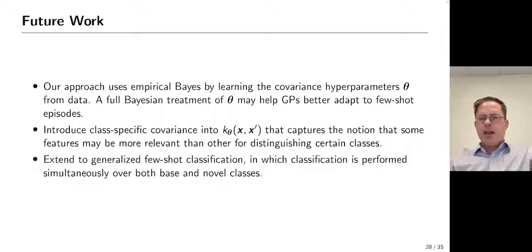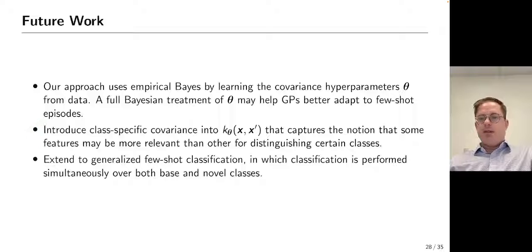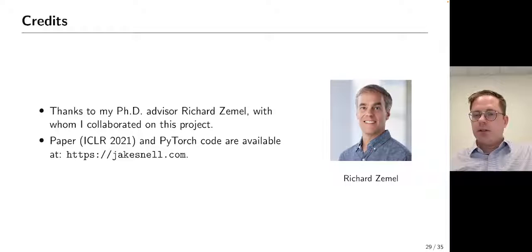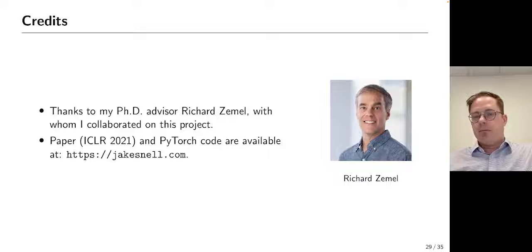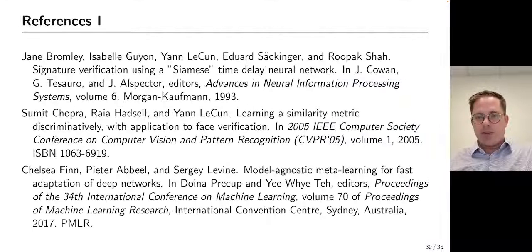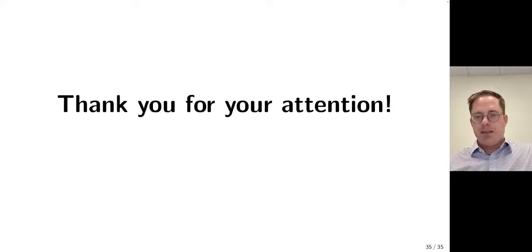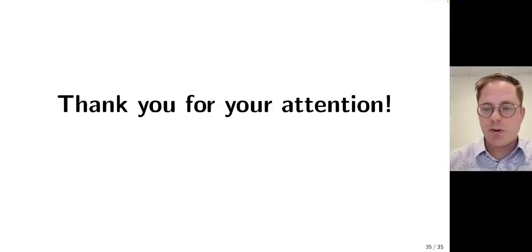In terms of future work, we may want to consider a full Bayesian treatment of hyperparameters rather than empirical Bayes, which may enable better adaptation. We may want to incorporate class-specific covariances since different features may be more relevant for distinguishing different classes, or extend to generalized few-shot classification where we classify over both base and novel classes. I'd like to thank Richard Zemel, my PhD advisor, with whom I collaborated on this project. The paper and PyTorch code are both available at my website. Thank you for your attention.